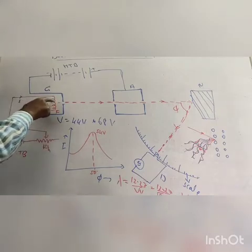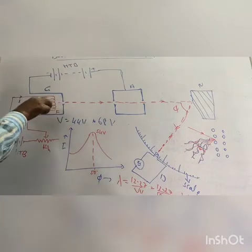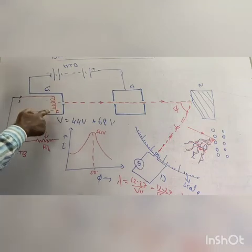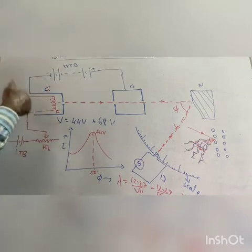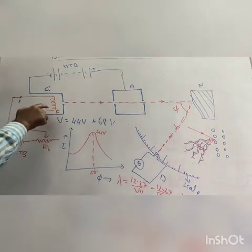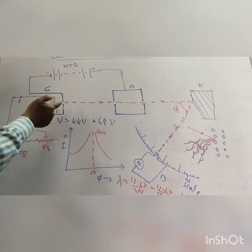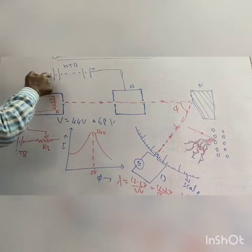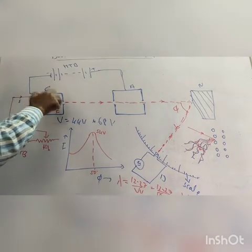F is the filament, a tungsten filament coated with barium oxide. The filament is connected to a low-tension battery and rheostat. When current heats the filament, electrons are emitted from the surface by thermionic emission. C and K are a hollow cylinder that covers the filament. This hollow cylinder has a center hole along the axis. The cylinder is connected to the negative terminal of the high-tension battery, so it becomes the cathode cylinder.